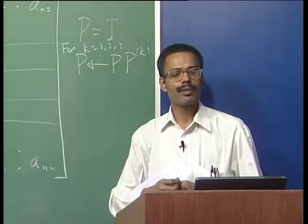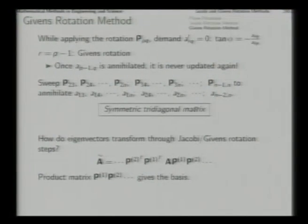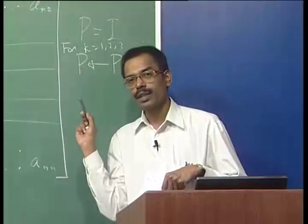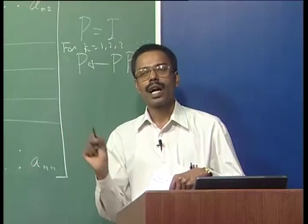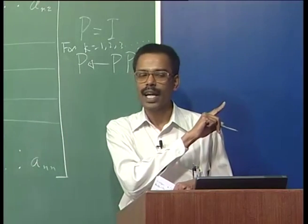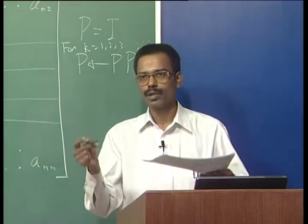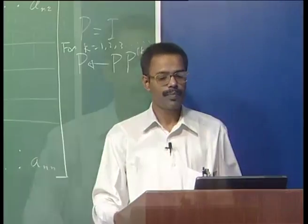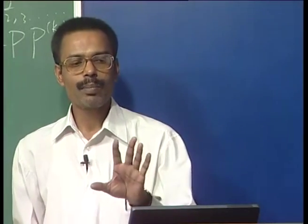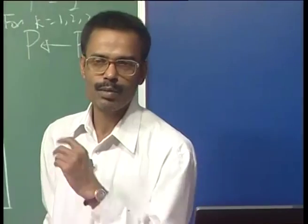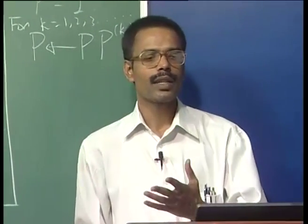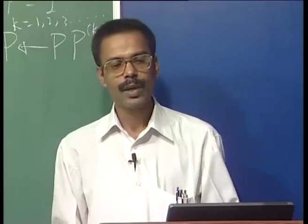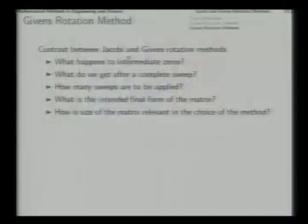If the matrix has been processed only up to symmetric tri-diagonal form by the Givens rotation method, that resulting P matrix will relate the eigenvectors of the original matrix and the tri-diagonal matrix A-prime which can be processed further through some other method. A few questions arise based on the comparison of the two methods — Givens rotation method and Jacobi rotations method.